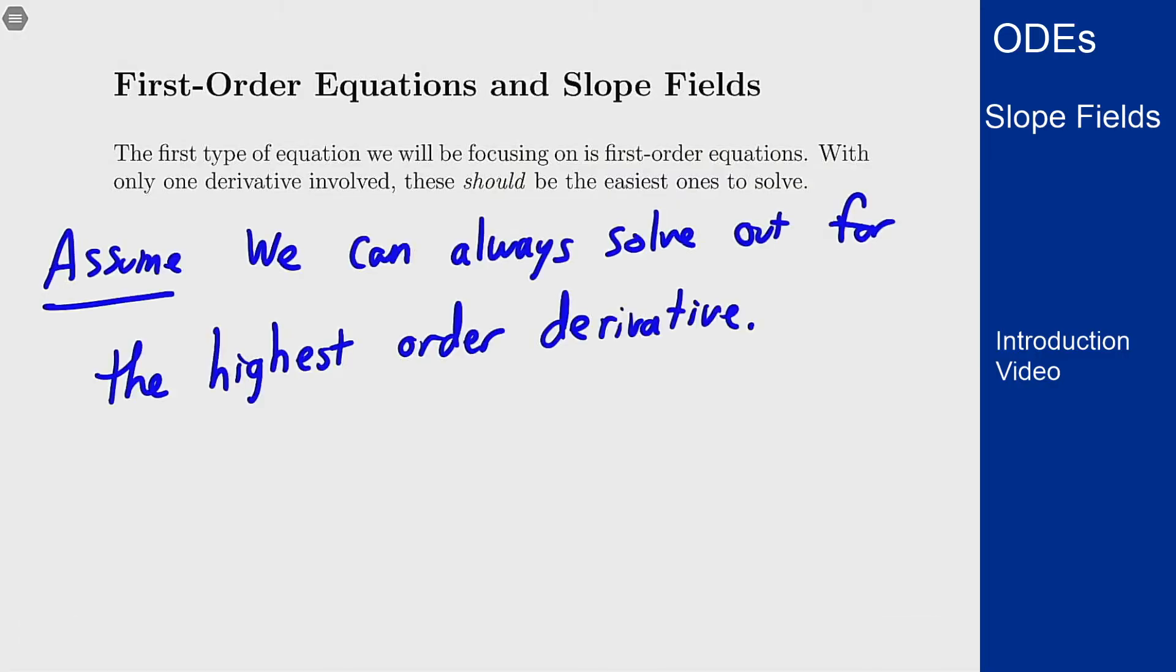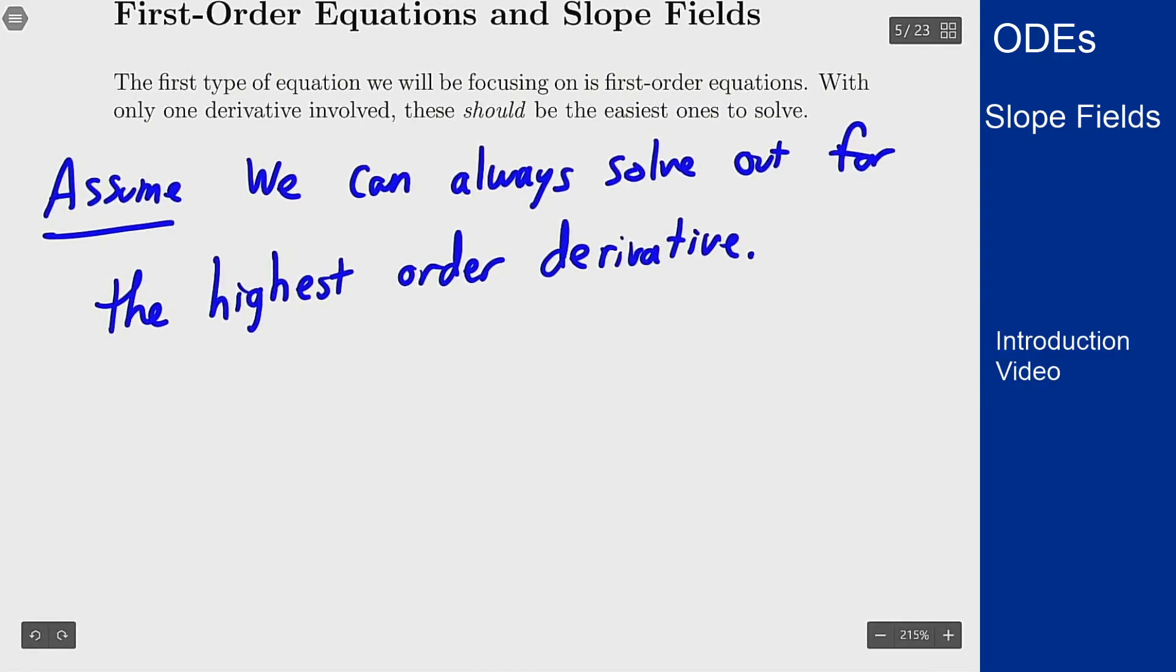In this case since there is only one derivative that means I can always have my dy/dt term isolated on one side and everything else on the right. And in that case the only thing that can be over there are values of t and y embedded in some function that I want.